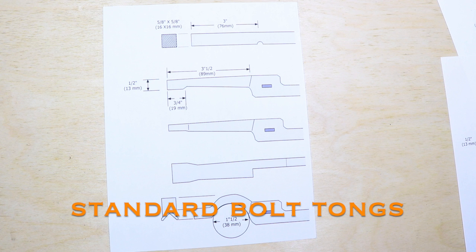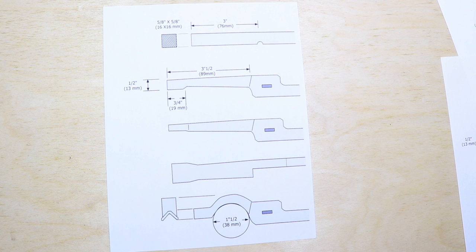The standard bolt tong is probably the pair of tongs that I use the most. They're great for holding round or square stock, and the open section at the back end of the jaws is really handy for working with odd shaped pieces of metal.